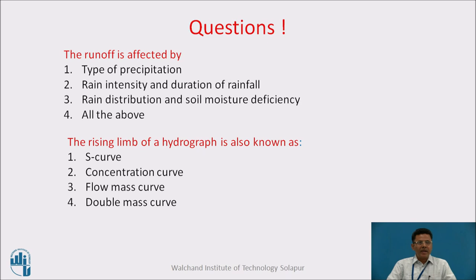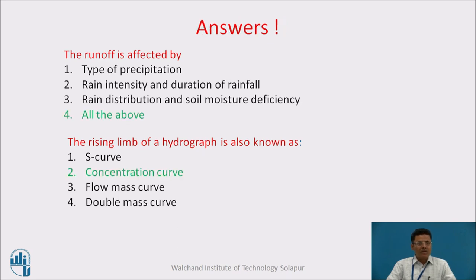Assessment questions: Runoff is affected by — 1) type of precipitation, 2) rain intensity and duration of rainfall, 3) rain distribution and soil moisture deficiency, 4) all of the above. One more question: the rising limb of a hydrograph is also known as — S curve, concentration curve, flow mass curve, or double mass curve?